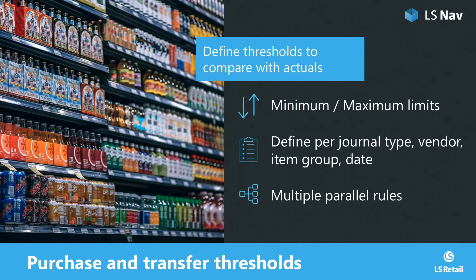The next step is to define thresholds to compare with the actual fields. Those threshold values are minimum or maximum limits and you can define those for different journal types, vendors, item groups, and date periods, but also for specific warehouses and stores. You can have multiple rules in parallel.